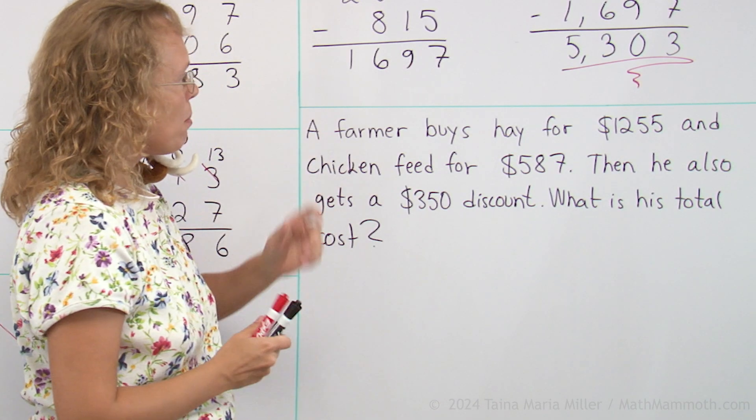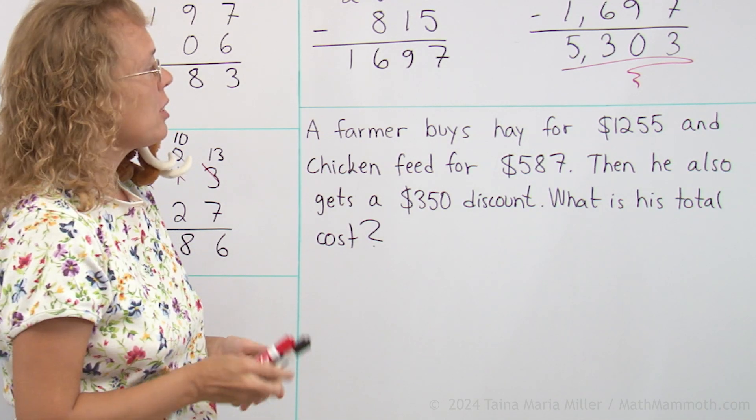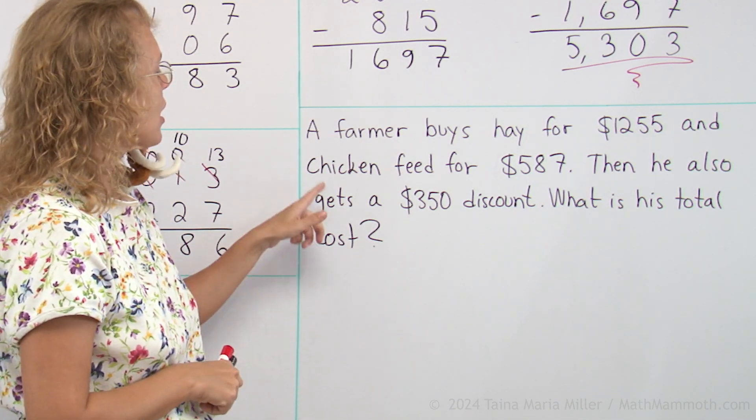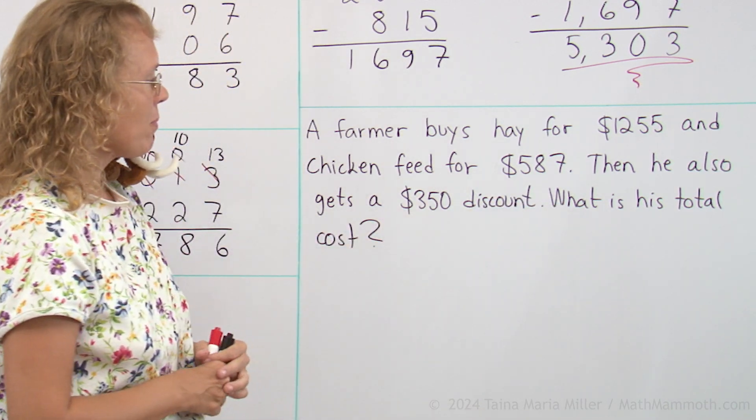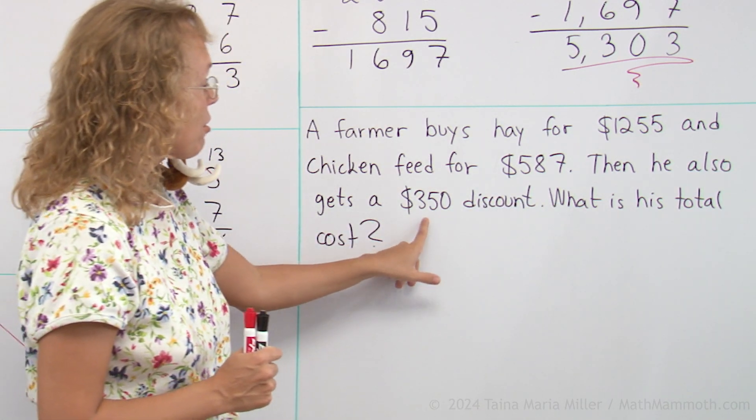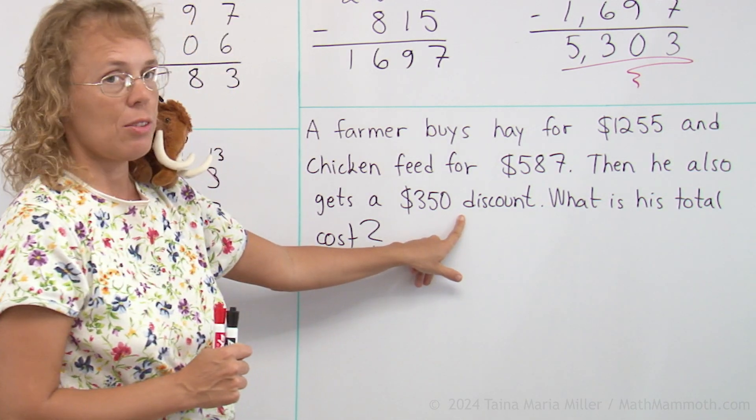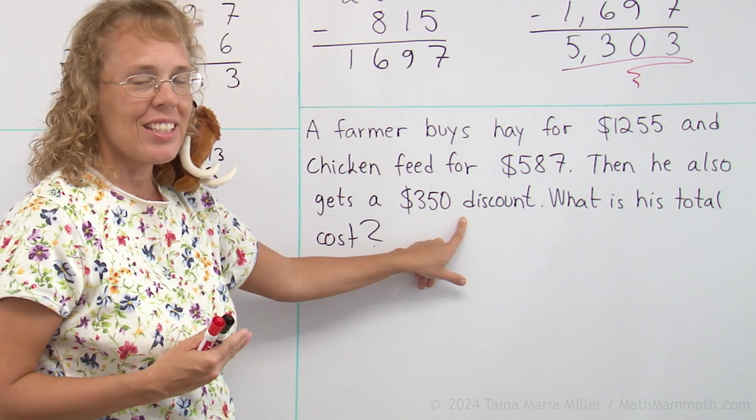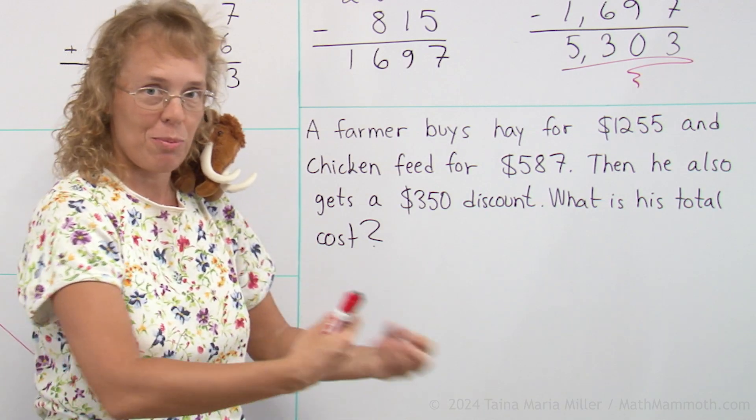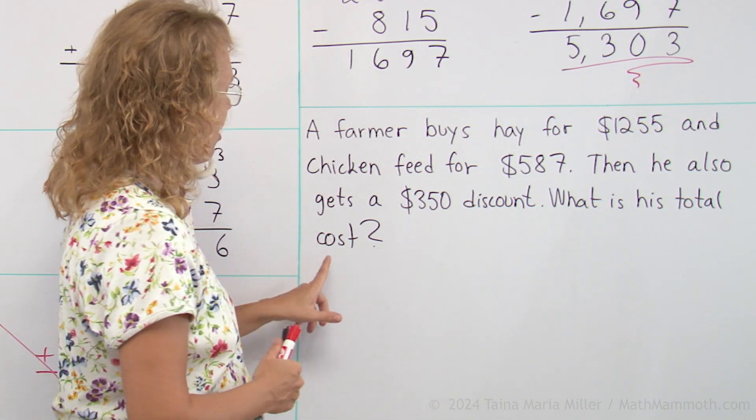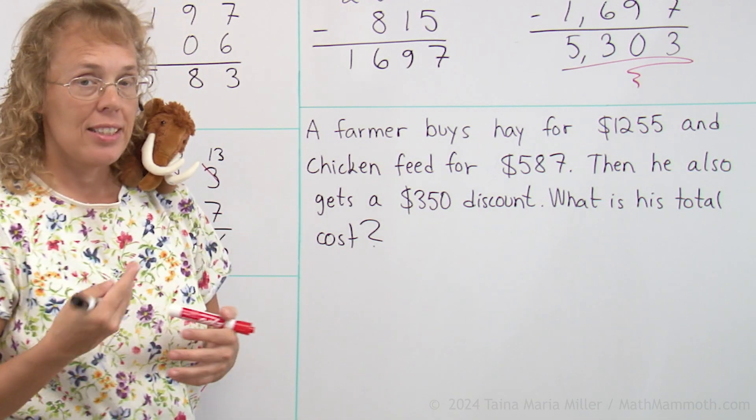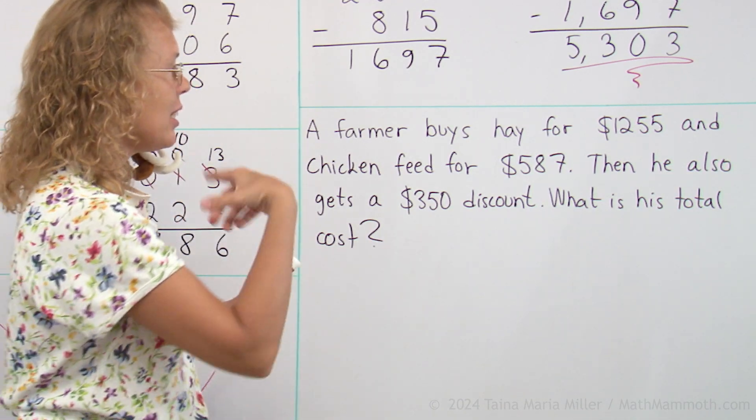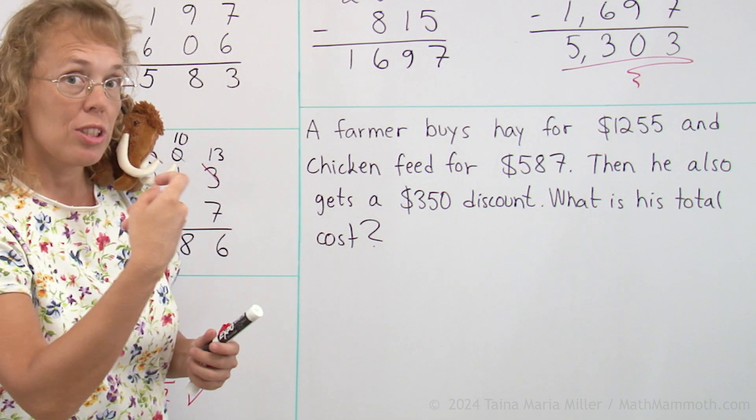Now, here a farmer buys hay for $1,255 and chicken feed for $587. Then he also gets a $350 discount. Discount means that they take that much off the price. What's his total cost? He buys two things and he gets a discount.